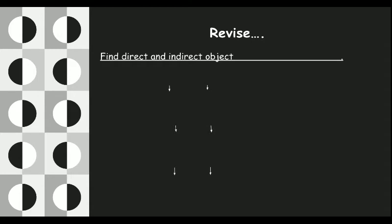Here you have to find out the direct and indirect object where the arrows are given — tell which one is direct and which one is indirect. The sentence is: 'I showed him the photo.' What will 'him' be and what will 'the photo' be? You can use D for direct object and I for indirect object. 'Him' will be the indirect object because 'I showed whom?' — I showed him. 'The photo' will be the direct object because 'I showed what?' — I showed the photo.